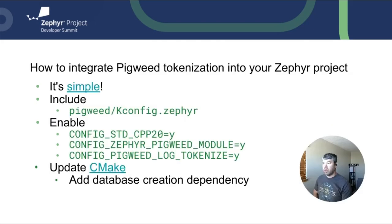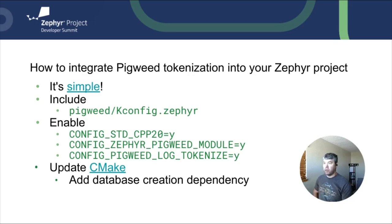You may be wondering how to integrate tokenizing into your project. It's actually quite simple. You'll need to sync Pigweed's SDK, include Pigweed's Zephyr Kconfig, then enable a few Kconfigs: C++ for Zephyr, the Zephyr Pigweed module, and Pigweed log tokenize. You'll then need to update your CMake dependencies to create the token database, and you're ready to kick off your compile and should be good to go.